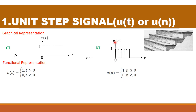Next, for the discrete case, u(n). Here the positive n axis and the negative n axis are shown. From 0 to infinity its value will be equal to 1, and from 0 to minus infinity its value is equal to 0. So u(n) = 1 for n ≥ 0, and u(n) = 0 for n < 0.